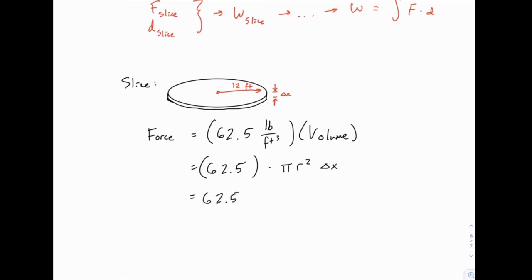So we have 62.5 times pi times 12 squared delta x, which works out to 9,000 pi delta x. Simplifying a little bit. So the force, the weight of one slice, once you know what you're looking for, is just the unit weight times the volume. The volume in this case was relatively simple, because they were circular and the radius wasn't changing, so the force works out to just be 9,000 pi times delta x.